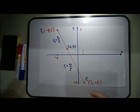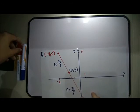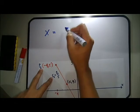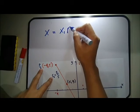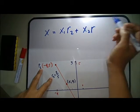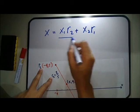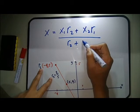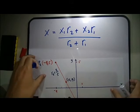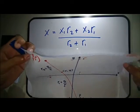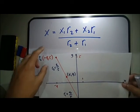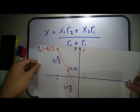The formula for finding the abscissa is x equals (x1 times r2 plus x2 times r1) all over (r2 plus r1). We will use this formula directly in our first solution.